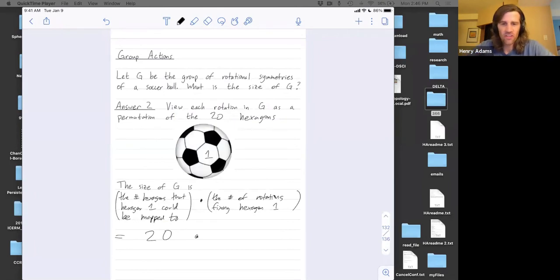Here, what is the number of rotational symmetries that fix hexagon one? You might think that it's six, right? Because there's six ways I could rotate this hexagon around on itself. Okay. But 20 times six is 120. I've messed up somewhere.